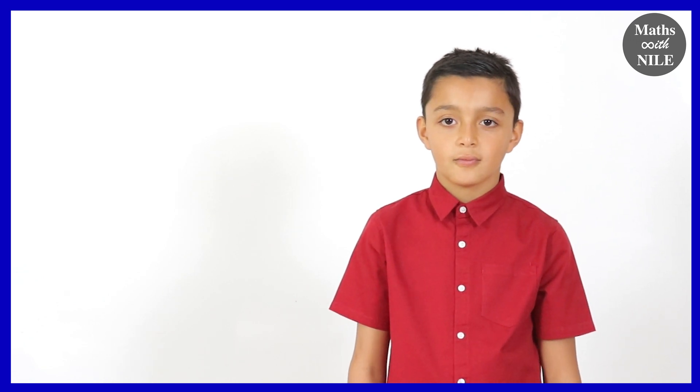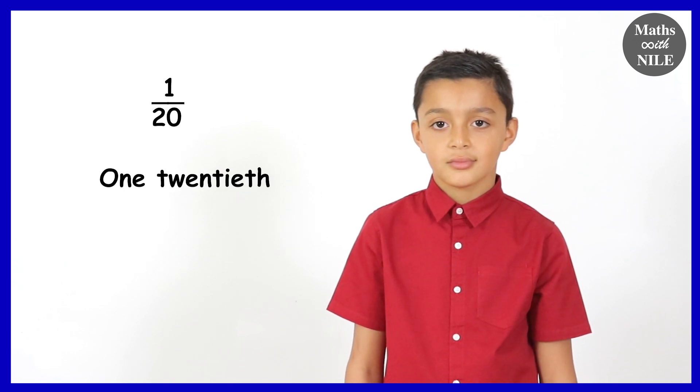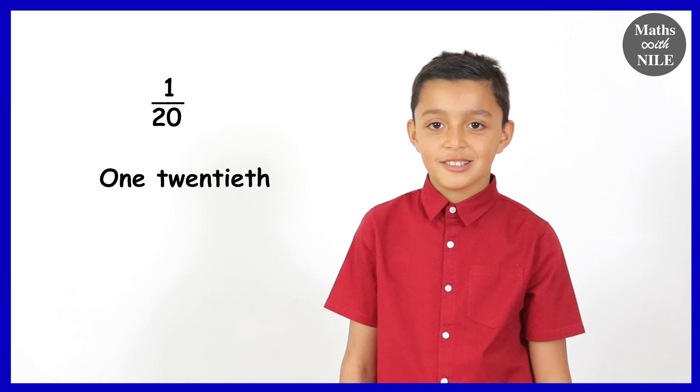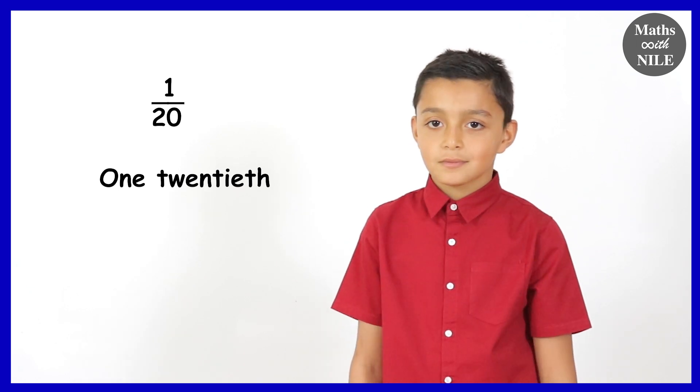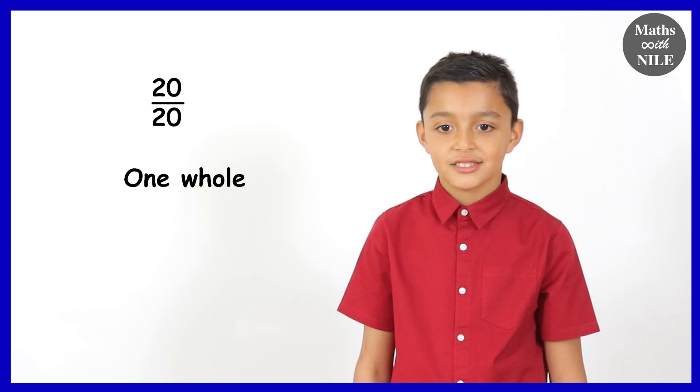And it goes on and it goes on. So, for example, one twentieth. How would you get one twentieth? You divide a whole into twenty equal parts. You divide a whole into twenty equal parts. And how many twentieths make one whole? Twenty. Twenty twentieths.